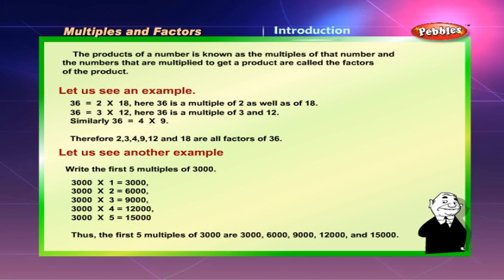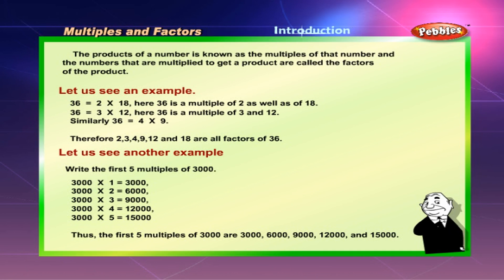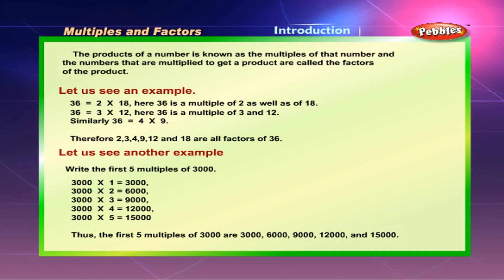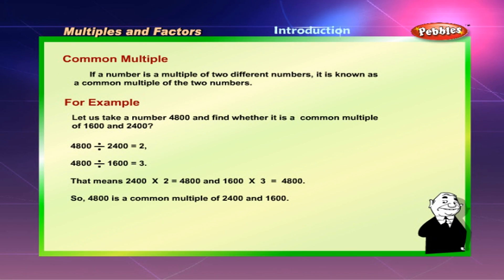Write the first five multiples of 3,000. 3,000 into 1 is 3,000; 3,000 into 2 is 6,000; 3,000 into 3 is 9,000; 3,000 into 4 is 12,000; 3,000 into 5 is 15,000. Thus the first five multiples of 3,000 are 3,000; 6,000; 9,000; 12,000; and 15,000.